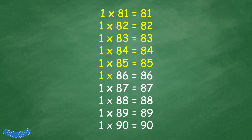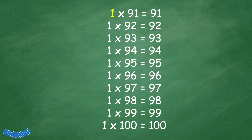1 times 86 equals 86. 1 times 87 equals 87. 1 times 88 equals 88. 1 times 89 equals 89. 1 times 90 equals 90. 1 times 91 equals 91. 1 times 92 equals 92. 1 times 93 equals 93.